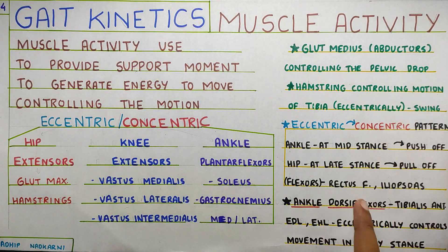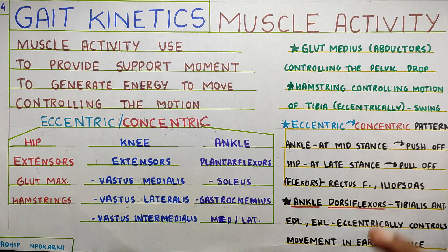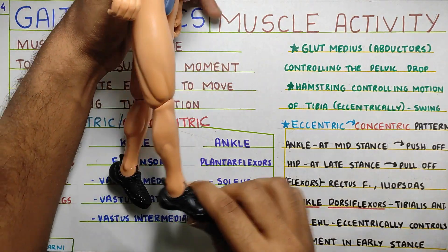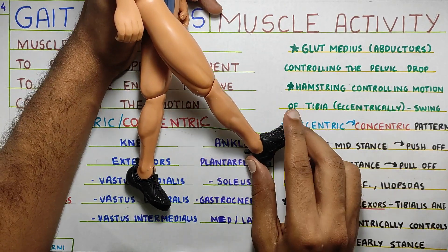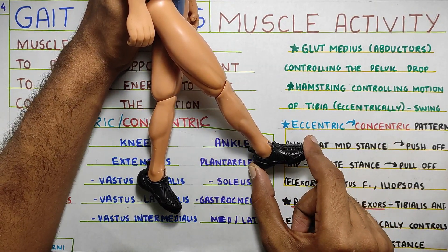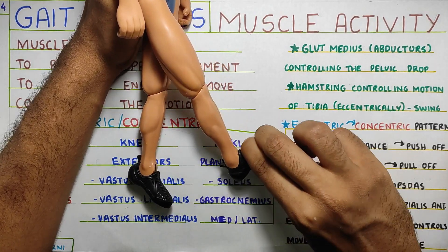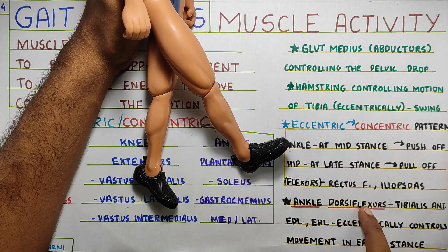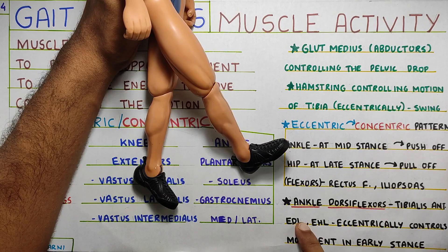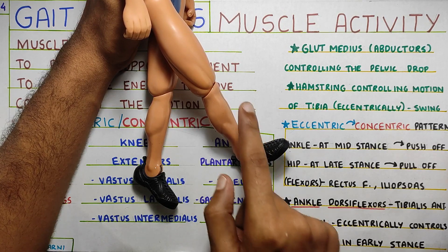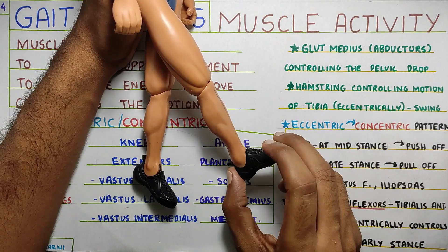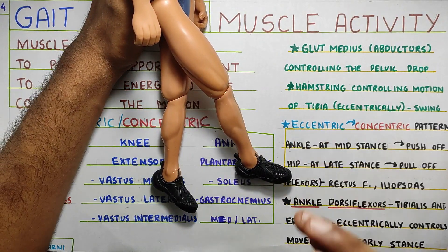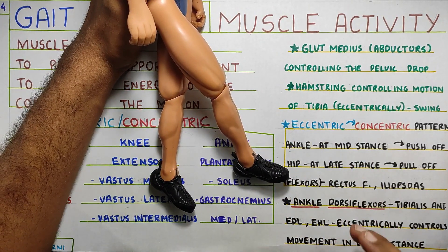Finally, ankle — plantar flexors were already covered, so the other part is the dorsiflexors. What will dorsiflexors do? The dorsiflexors will control your foot downward. When you are stepping and putting your foot down, this downward plantar flexion movement will be controlled by the anterior muscles of your foot — basically the dorsiflexors like tibialis anterior, extensor digitorum longus, and extensor hallucis. All these will be working eccentrically to control the downward movement of your foot.